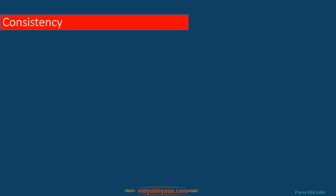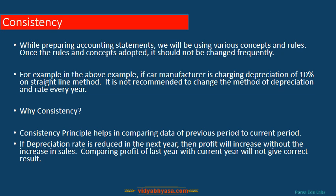The next concept is Consistency. As discussed in the characteristics of accounting information, consistency clearly states that whatever rules and regulations a company applies, they should keep using the same principles year on year. Changing any method between years will make the data incomparable. For example, if you are using a depreciation rate of 10 percent straight-line method, use the same method for the next few years — otherwise the comparability of the data will be lost.